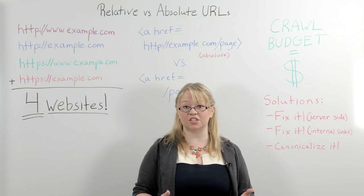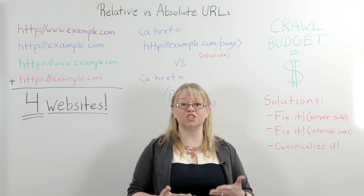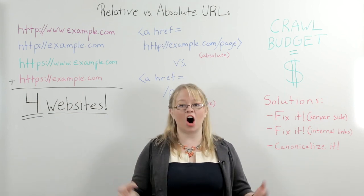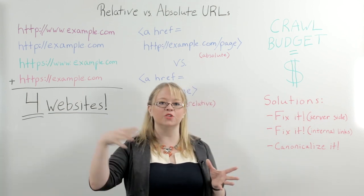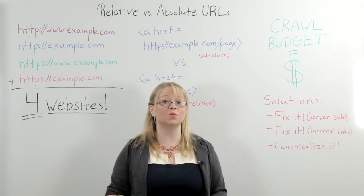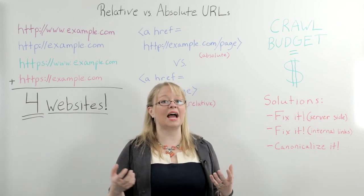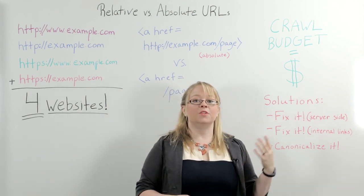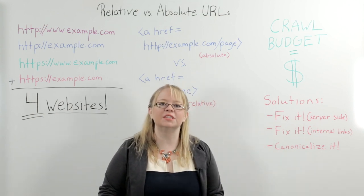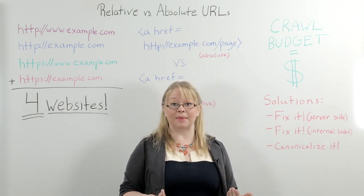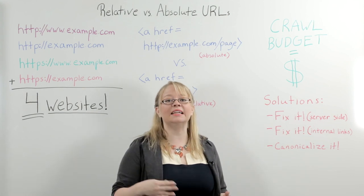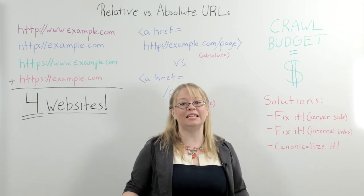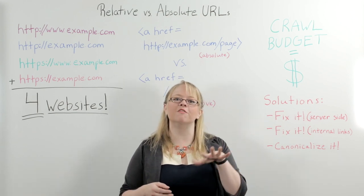It's important to remember that for Google, crawl budget costs actual dollars. One of Google's biggest expenditures as a company is the money and the bandwidth it takes to crawl and index the web. All of that energy lives on servers, and using that bandwidth costs Google actual real dollars. So Google is incentivized to crawl as efficiently as possible, because when they crawl inefficiently, it costs them money. If your site is not efficient to crawl, Google is going to save itself money by crawling it less frequently and crawling to fewer pages per crawl.